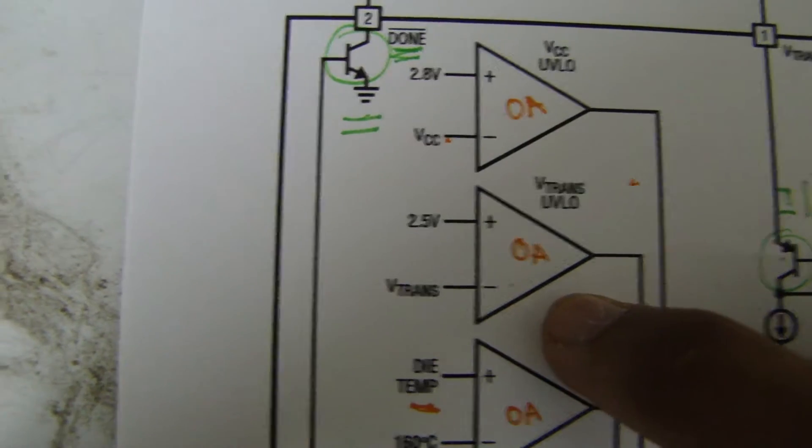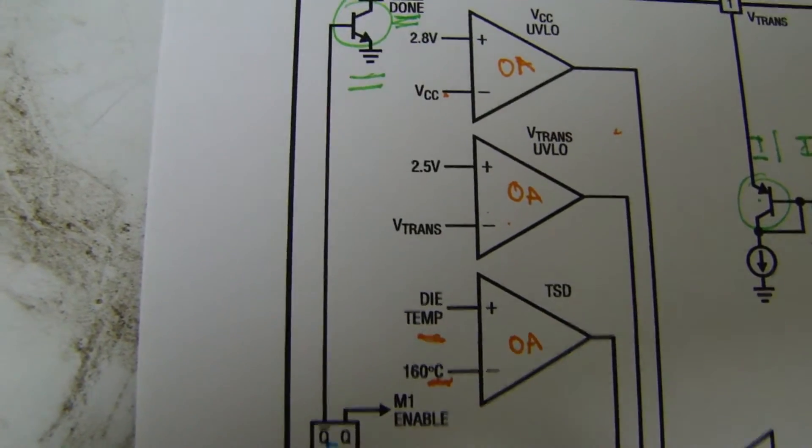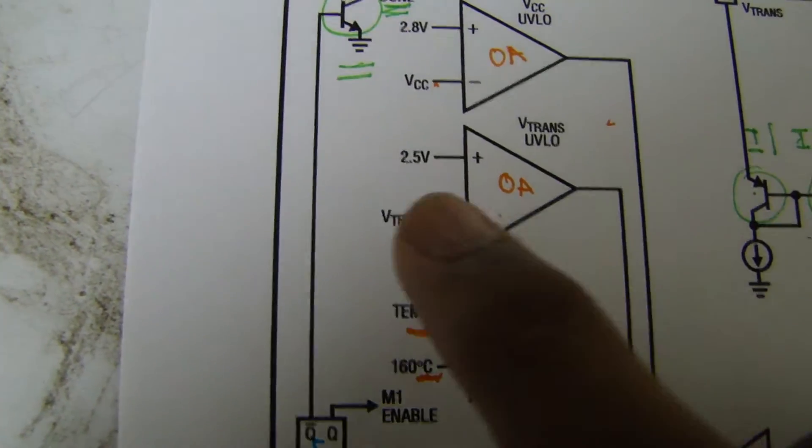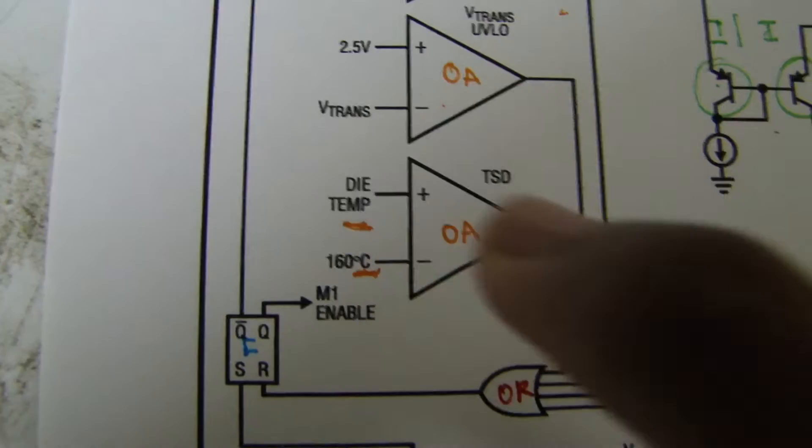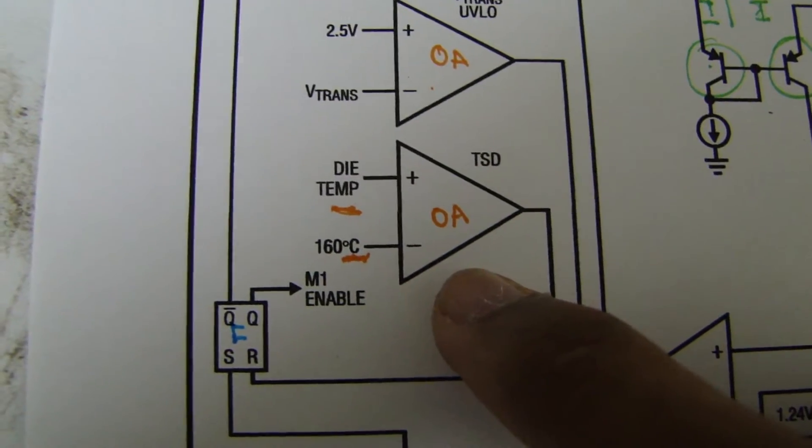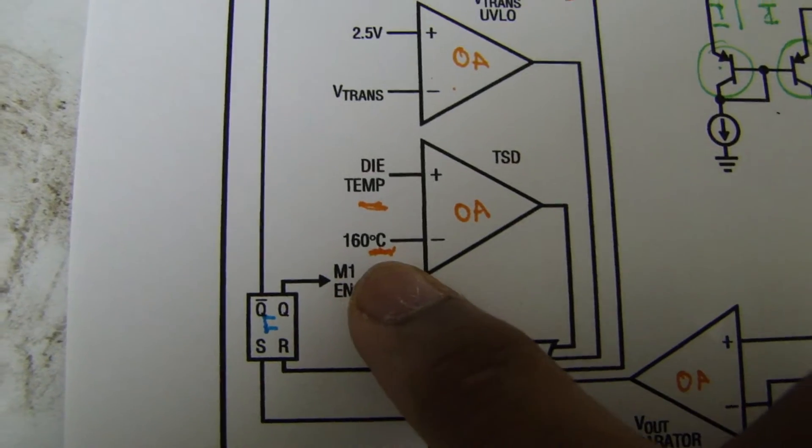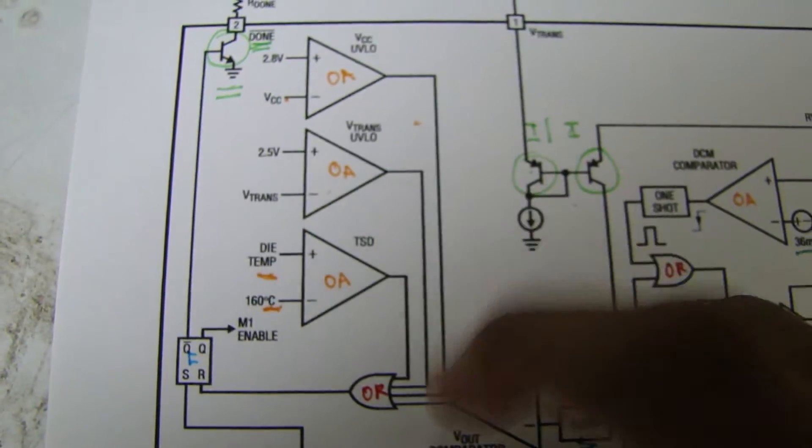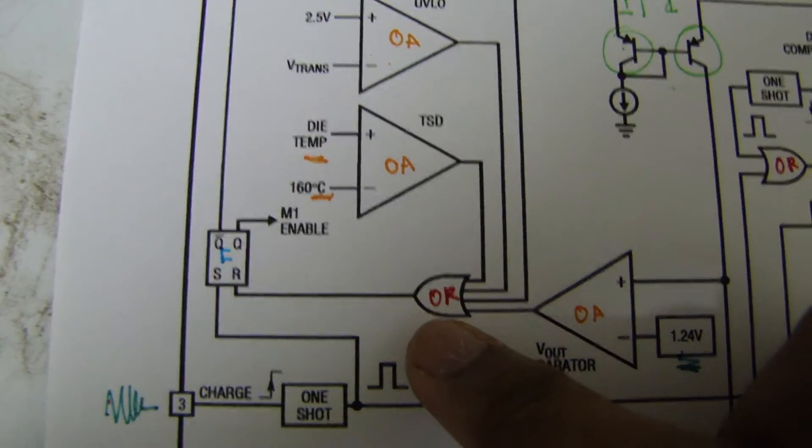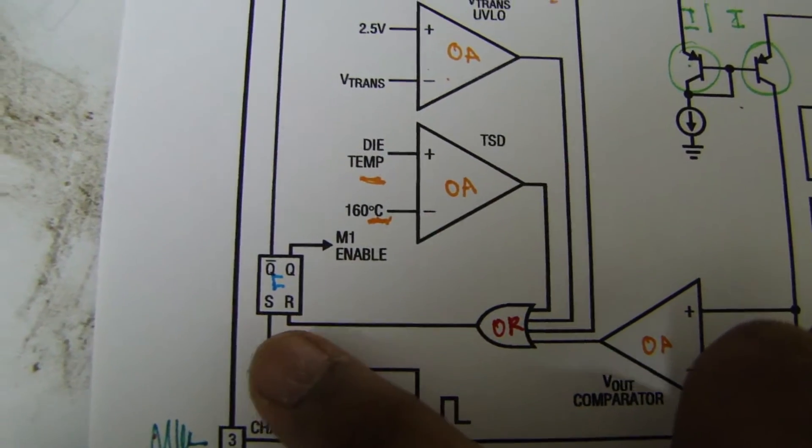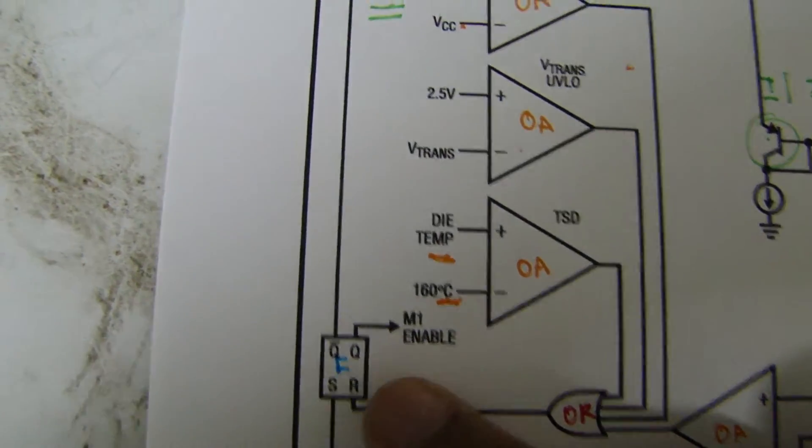Same thing. If the transformer voltage goes, the lower side of the transformer, I mean there is separate positive voltage and transformer input voltage. So if that goes below 2.5 volts, it cuts off. And this is a temperature cutoff. If it goes beyond 160 degrees Celsius, it cuts off charging. All the outputs of this op-amp are connected to this OR gate that sends a signal to this flip-flop that enables charging.